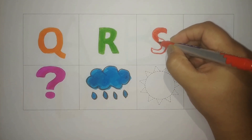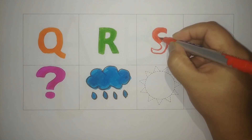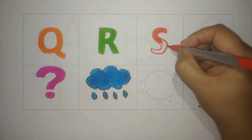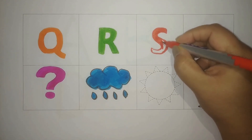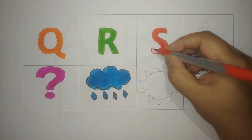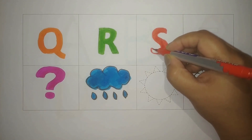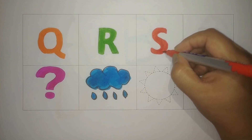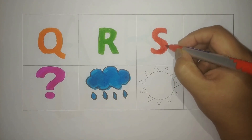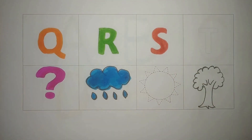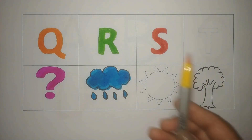Red color. What other words start with the letter S? S for sun, S for stars, S for snake. Red color. Yellow.